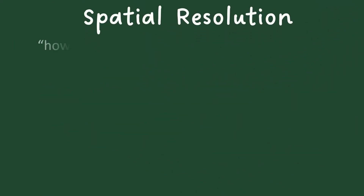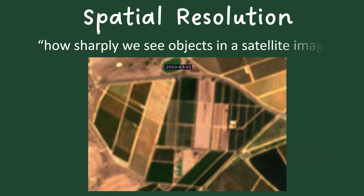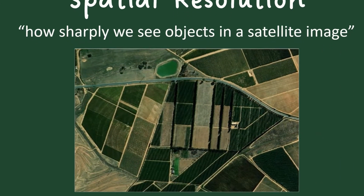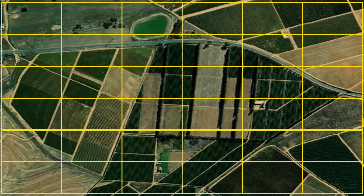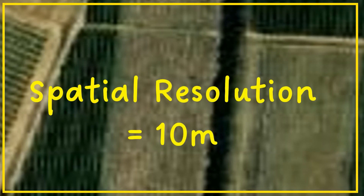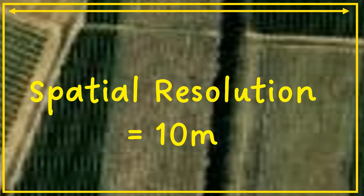Spatial resolution refers to how sharply we see objects in a satellite image. Such an image is composed of a matrix of pixels. One pixel therefore represents the smallest area on that image. If a sensor has a spatial resolution of 10 meters, like in the case of Frootlook images, it means that each pixel represents an area of 10 meters by 10 meters on the ground.